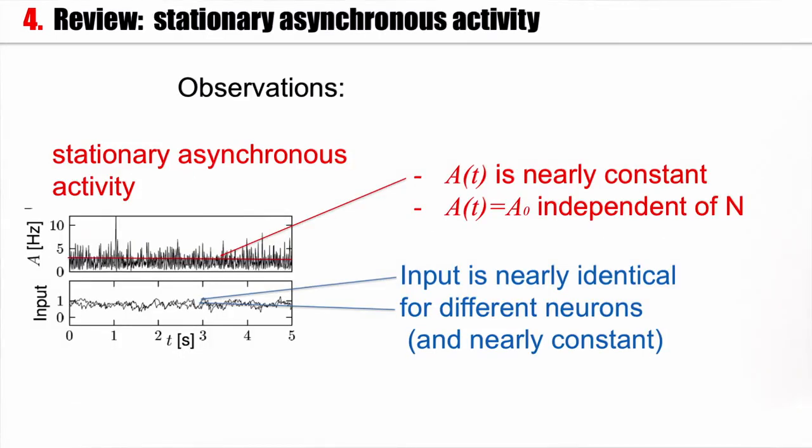We start from our observations in the simulations. We observed that the activity is nearly constant. We can define a value of the activity A₀ and this value is independent of the number n of neurons.